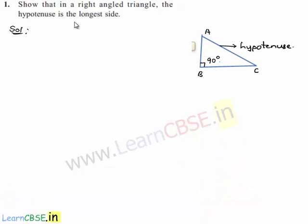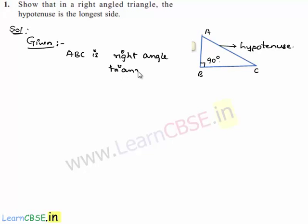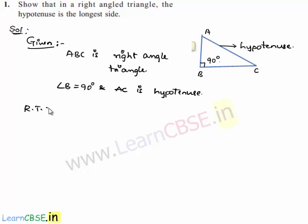Here in the question, let us note down the given information. We assume that ABC is a right angle triangle with angle B equal to 90 degrees and AC is the hypotenuse. We are required to prove that the hypotenuse, that is AC, is the longest side.